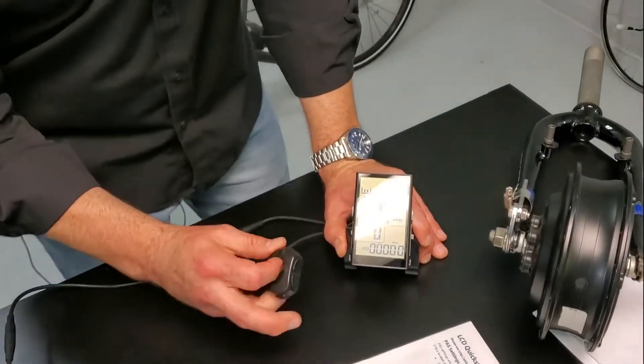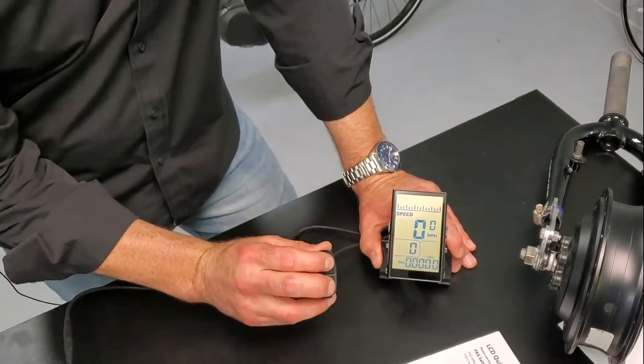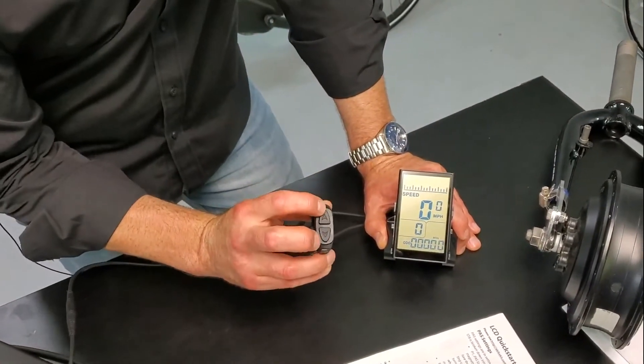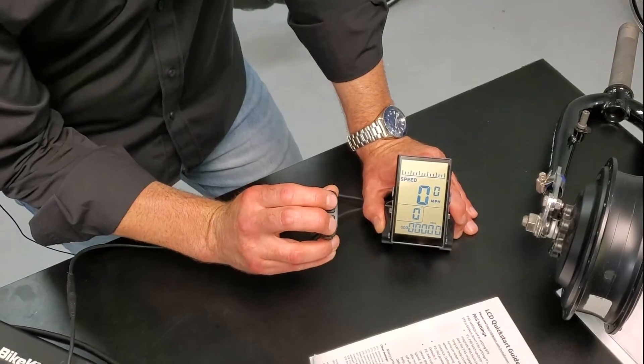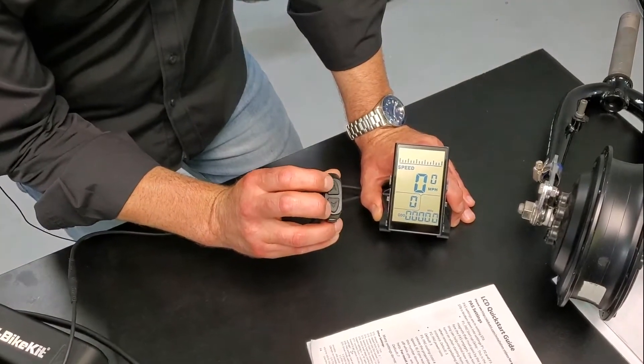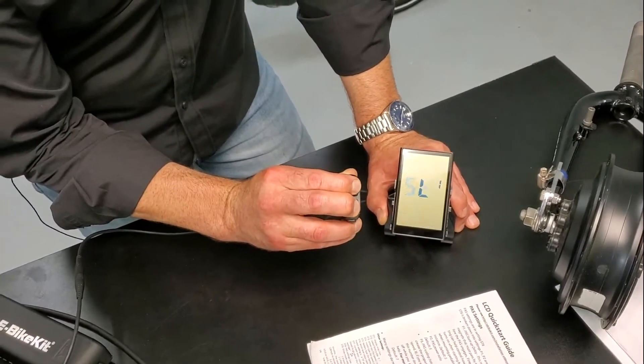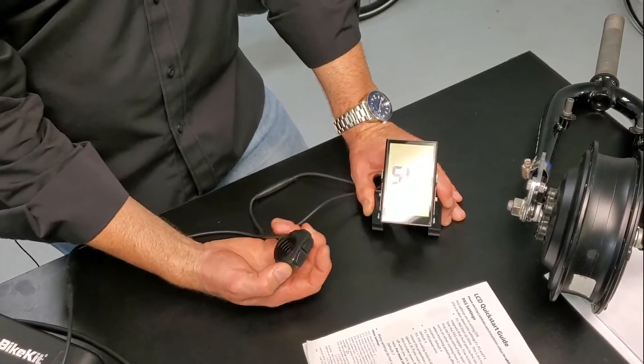We're going to get into the settings and we're going to go right to the pedal assist settings. I'm going to hold down and get into the settings menu. I'm going to hold down the up and down arrow together, simultaneously together, a couple seconds, and that gets us into the settings menu.